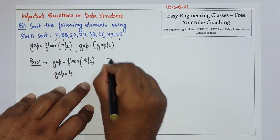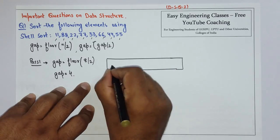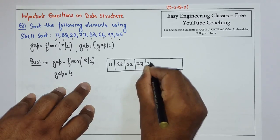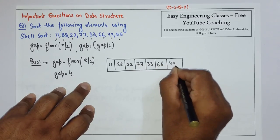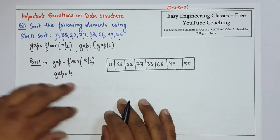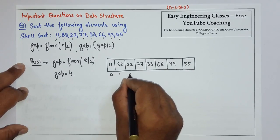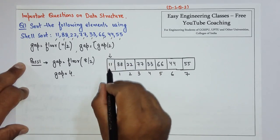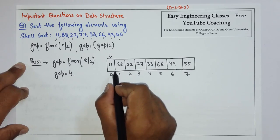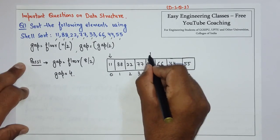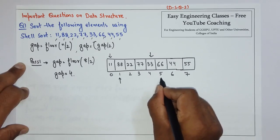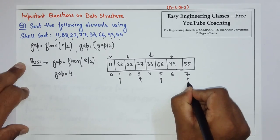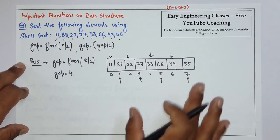Now let's see how the sorting is done in shell sort. This is the array with positions 0th through 7th, and gap is 4. We mark the elements which will be compared at a gap of 4. Element at 0 will be compared with element at 4, element at 1 with element at 5, element at 2 with element at 6, and element at 3 with element at 7. If elements are not in order we will swap them.